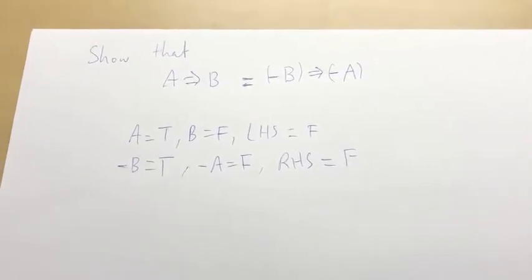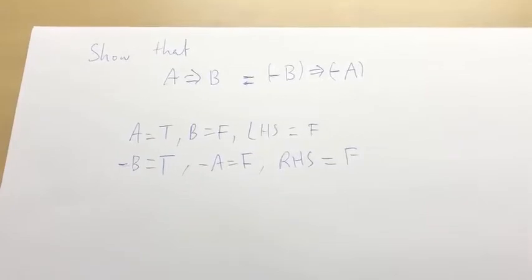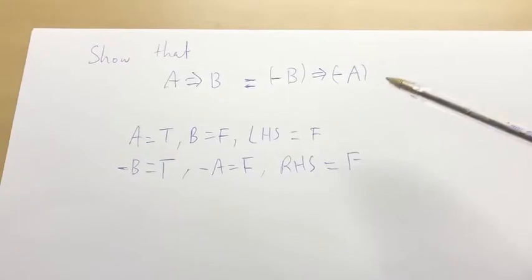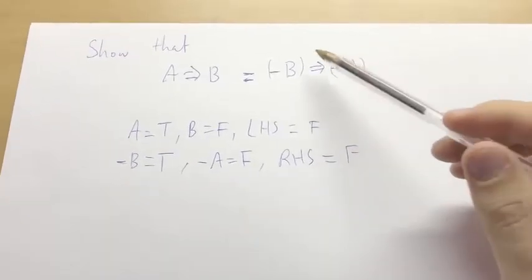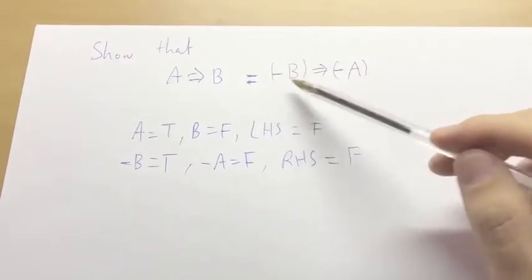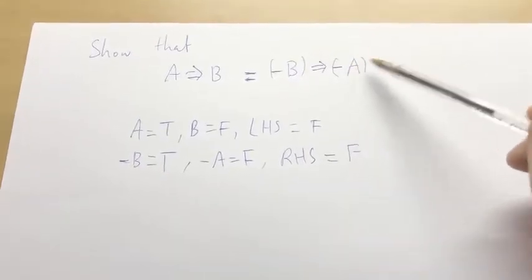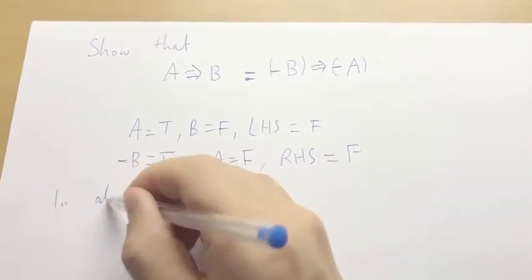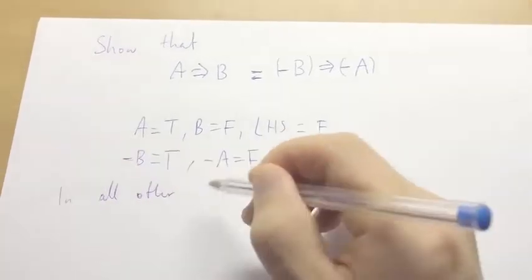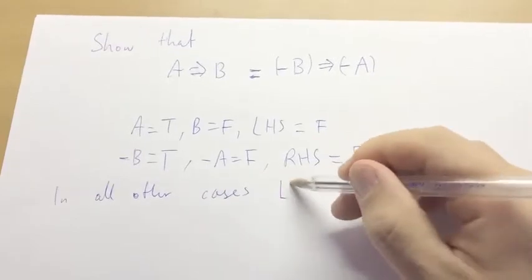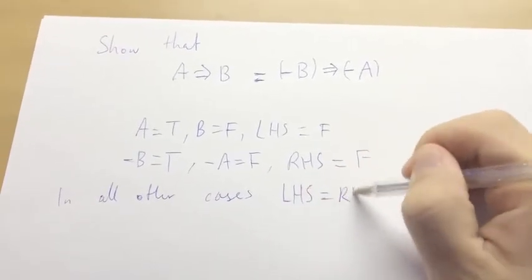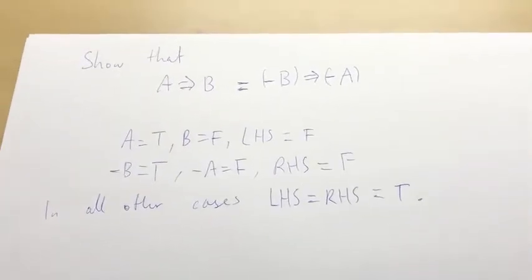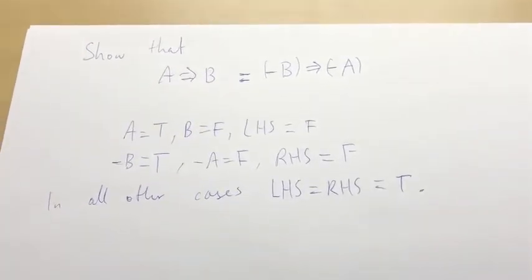Okay, and actually you'll notice that the right-hand side is only false under these circumstances, because it's the only way to get the first thing in the implication to be true, and the second thing to be false. And so in all other cases, left-hand side equals right-hand side equals true. So that's enough to show that as an exercise.